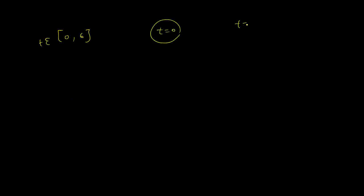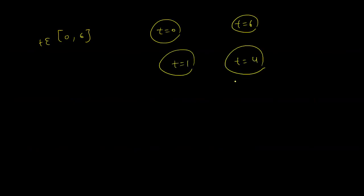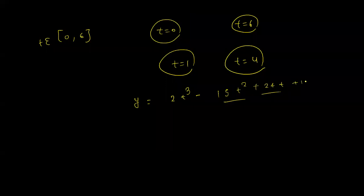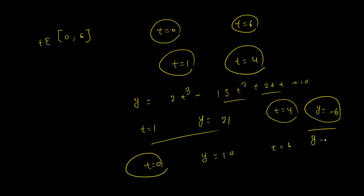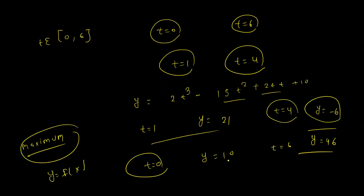Checking the interval t from 0 to 6, we evaluate at t = 0, t = 1, t = 4, and t = 6. At t = 1, y = 21. At t = 4, y = -6, which is our minimum. At t = 0, y = 10. At t = 6, y = 46. So the maximum value of y = f(x) is 46, and the minimum value is -6.